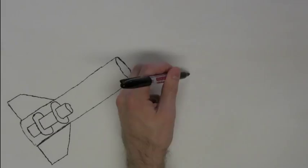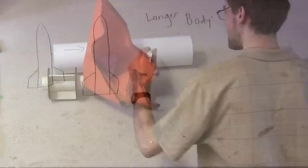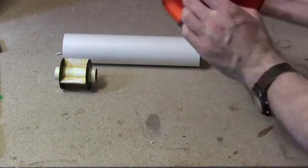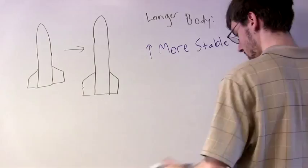The body of the rocket is the primary structural component. We can lay out our internal components beside a stock body tube to figure out how long it needs to be before we actually cut cardboard. Making the body longer increases the stability of the rocket, but it also increases mass and drag.